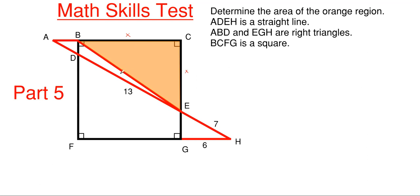Well, we are given some information here that ADEH is a straight line. We're given dimensions from D to E and from E to H, and we are also given dimensions of G to H. And we are told that ABD is a right triangle and EHG is also a right triangle, and the overall shape is a square, which will be nice and easy and make this problem a little bit faster.